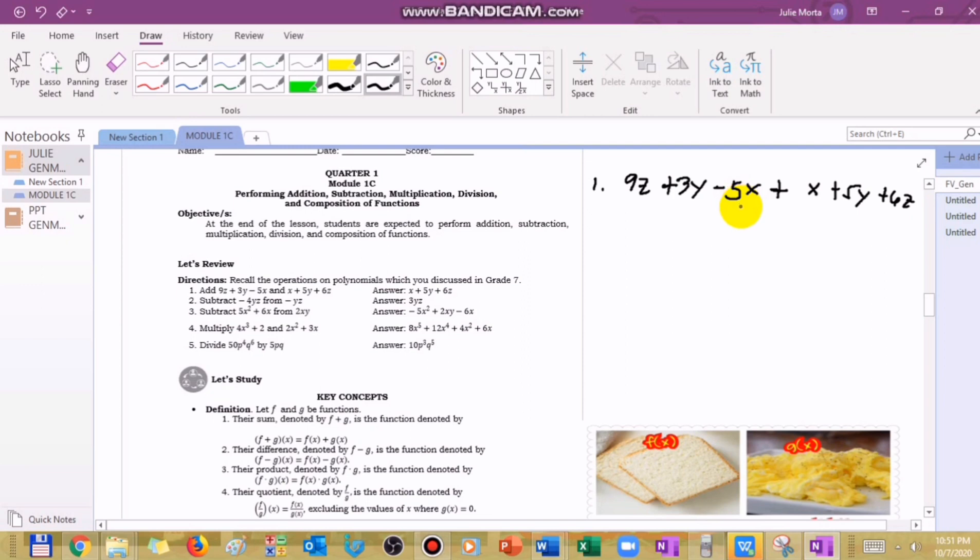When we say combine like terms, look for the same variables. We have 9z and 6z, so 9z plus 6z gives us 15z. Then we have 3y and 5y, so plus 8y. Then negative 5x plus x, so you subtract if they have different signs, giving minus 4x.